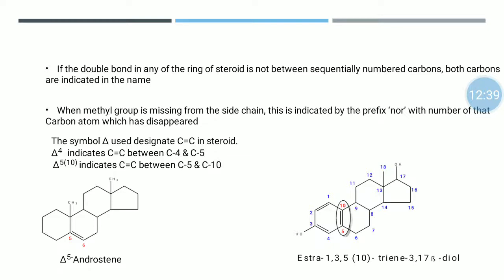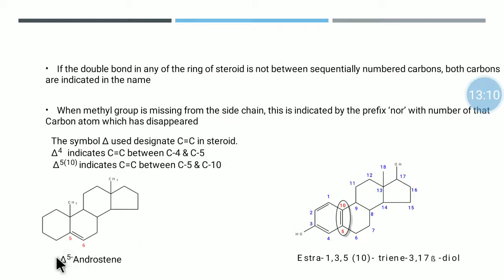Let us explore the double bond notation. The symbol delta is used to designate the carbon-carbon double bond in a steroid. Delta-5 means it is a double bond between carbon number 5 and carbon number 6. Whenever you observe an IUPAC name of a steroid with the sign delta, remember delta indicates a double bond. The superscript number written on that delta indicates the position number of that double bond — from where that double bond originates.